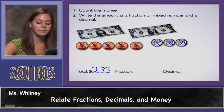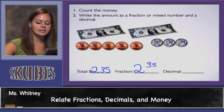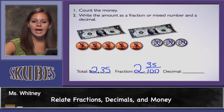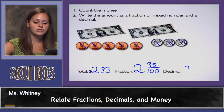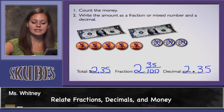To write this as a fraction it will be a mixed number — I have 2 wholes and 35 hundredths. As a decimal, we write 2 and 35 hundredths.